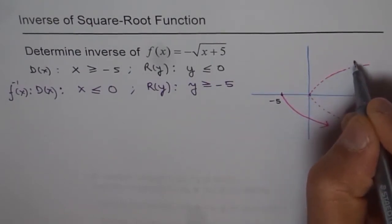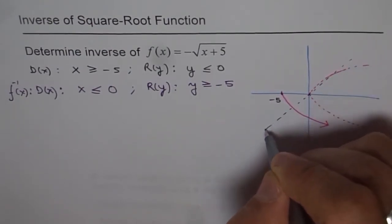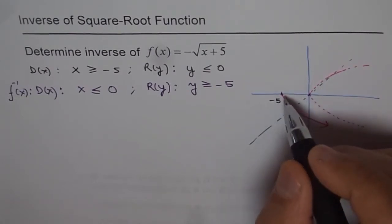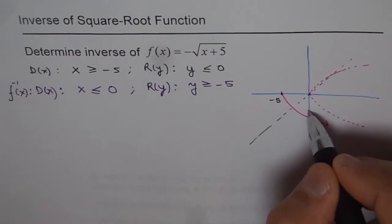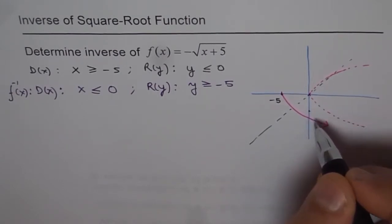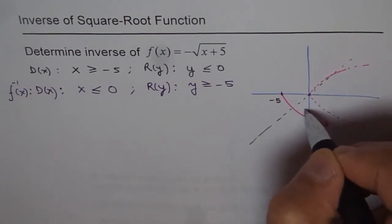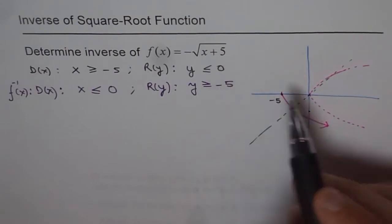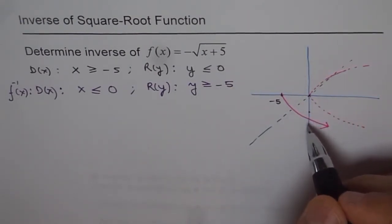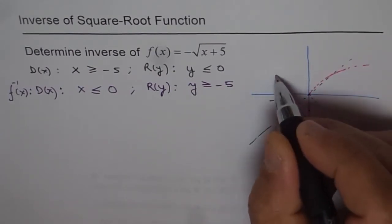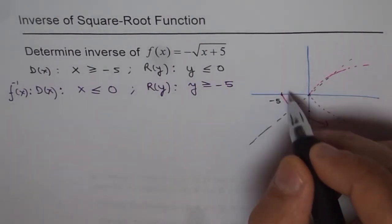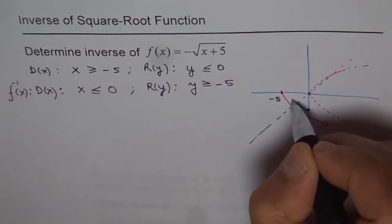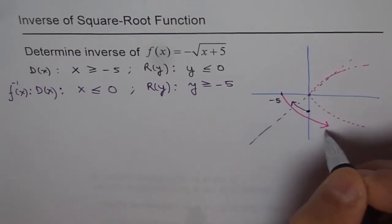If we try to sketch the inverse, we draw the line y = x, and the graph will flip over it. The point that was at the x-intercept of -5 will now appear as a y-intercept, and the curve that was going down will now go upwards. So the inverse is a kind of parabola where x ≤ 0 and y ≥ -5, going up from that point. That is what we are expecting as the inverse of the given function.